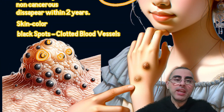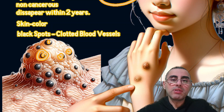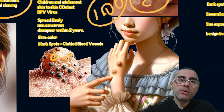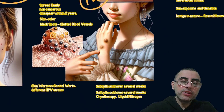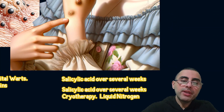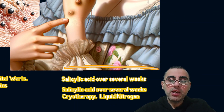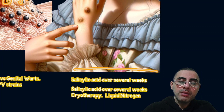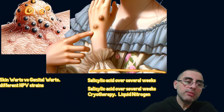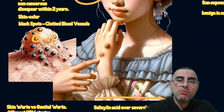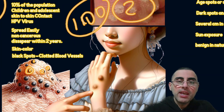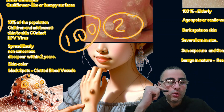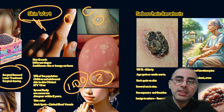You may notice black spots on warts — this is still part of the wart; it is just a clotted blood vessel inside the wart. Treatment options include salicylic acid creams applied over several weeks, cryotherapy, or surgery — cryotherapy is very effective and used often. But in most cases no treatment is needed. Skin warts are contagious and spread very easily through direct contact or contact with contaminated surfaces.